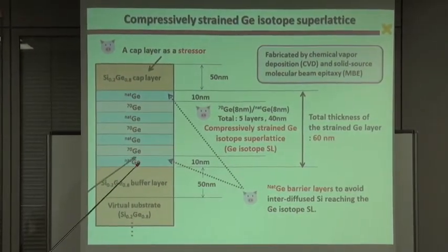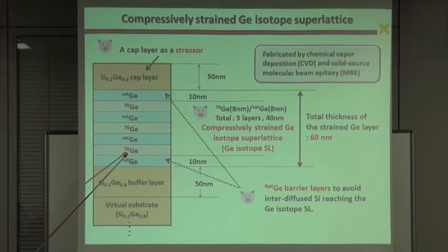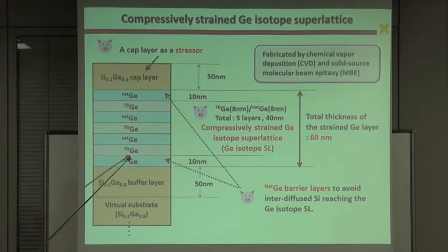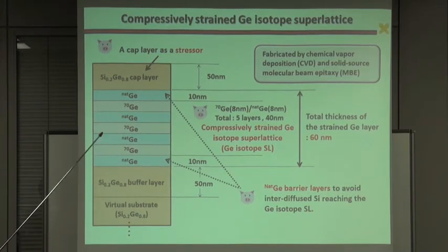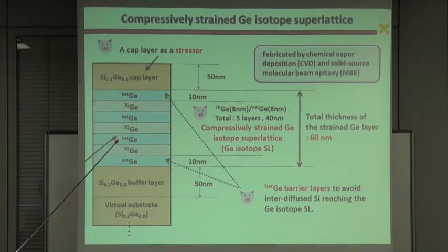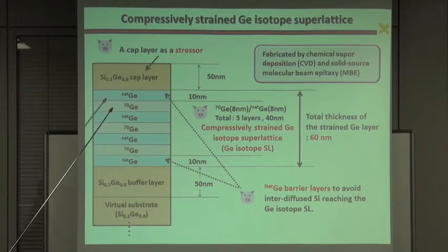And this layer was composed of alternating layers of natural germanium and stable isotope germanium. Each layer was 8 nm. And these two 10 nm natural germanium layers were acting as barrier layers to avoid inter-diffused silicon reaching the germanium isotope superlattice. And finally we grew a silicon germanium cap layer on the top as a stressor.